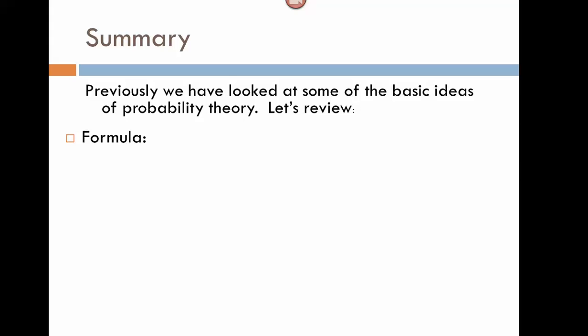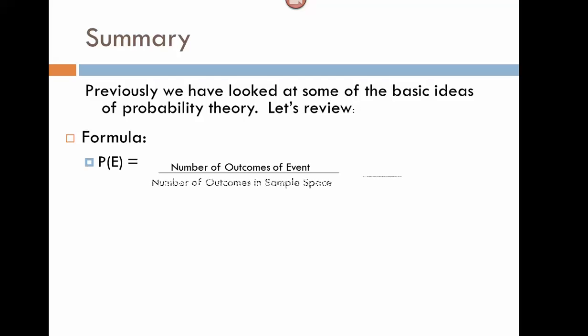Number one, we looked at the formula for the probability of any event, and we found that we can find the probability of any event by figuring out how many ways our event can occur divided by how many outcomes are actually possible — so how many outcomes are in our sample space.